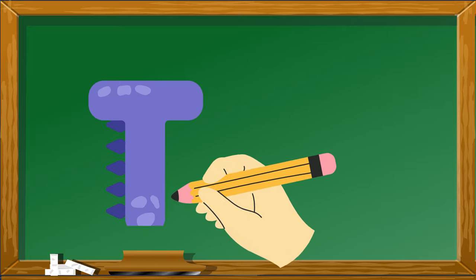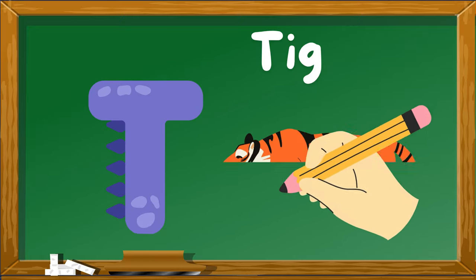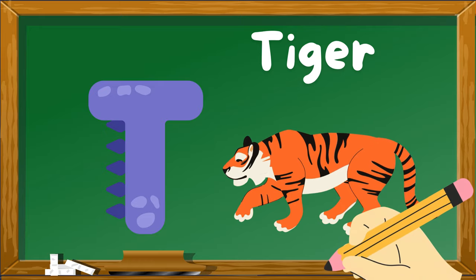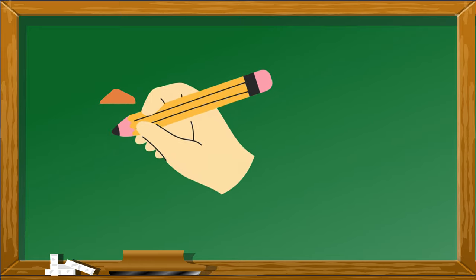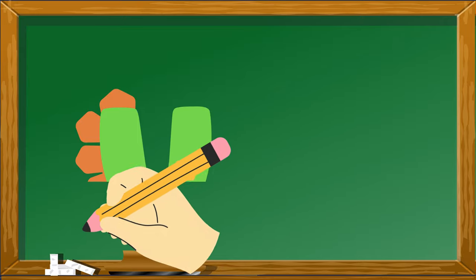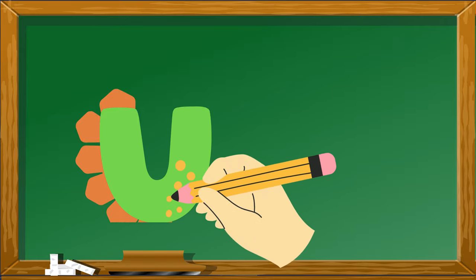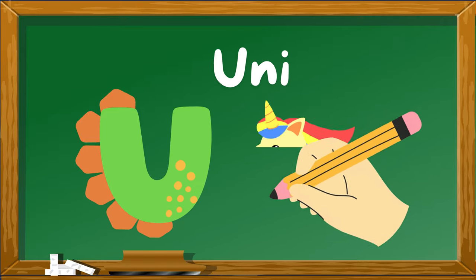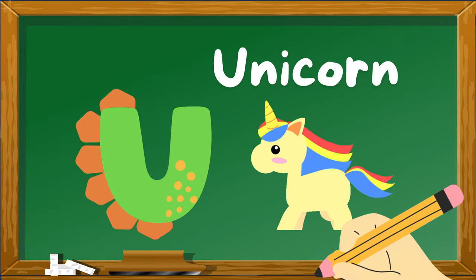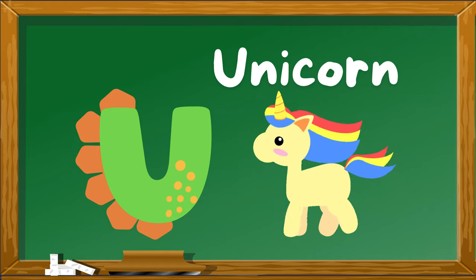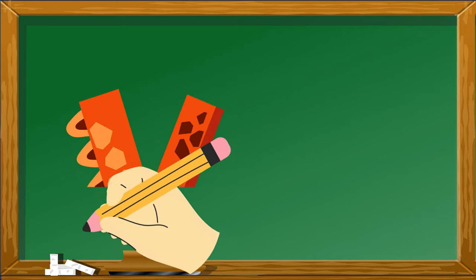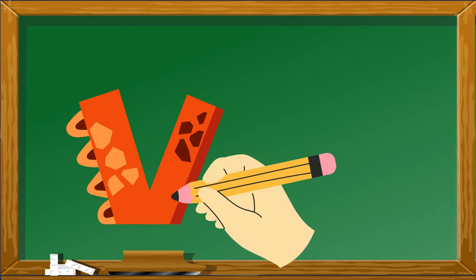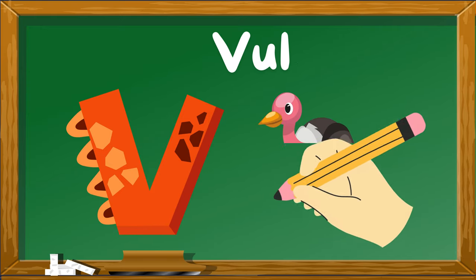T is for Tiger. U is for Unicorn. V is for Vulture.